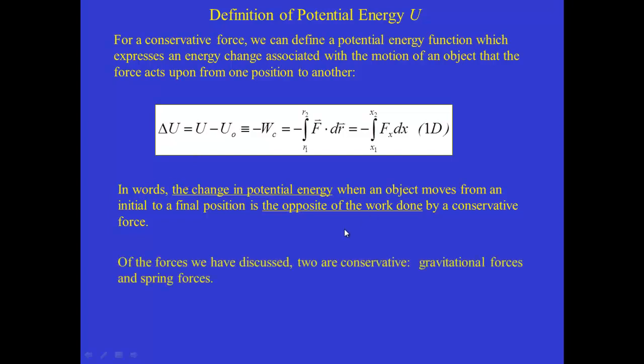The change in potential energy when an object moves from an initial to a final position is the opposite of the work done by the conservative force. Of the forces we've talked about so far, two of them are conservative forces that we can write potential energy functions for: gravitational forces and spring forces. So let's consider both of those.